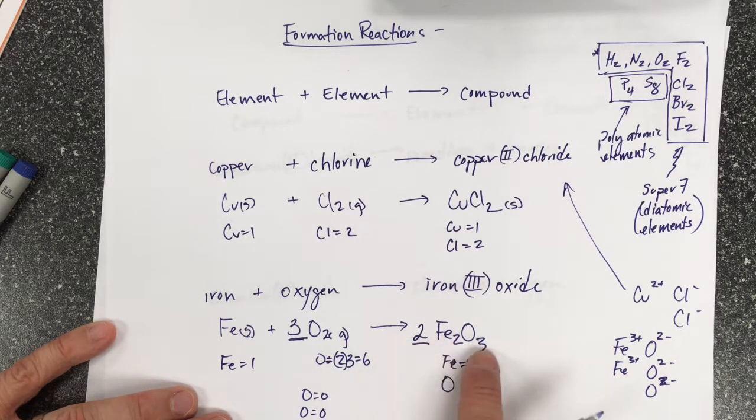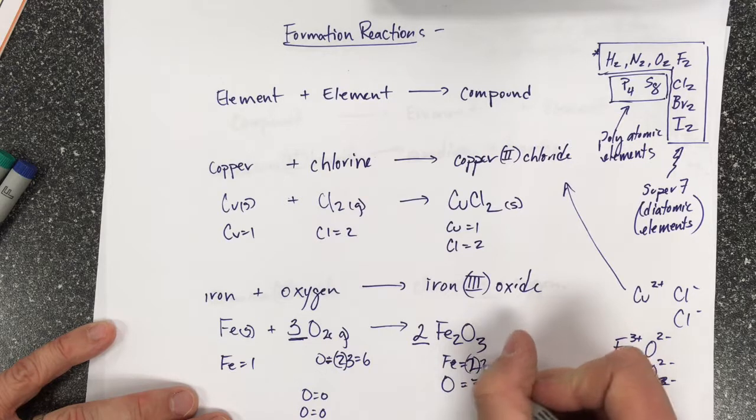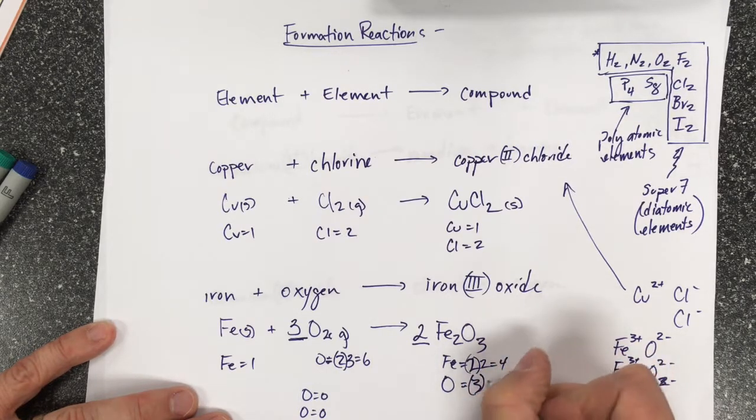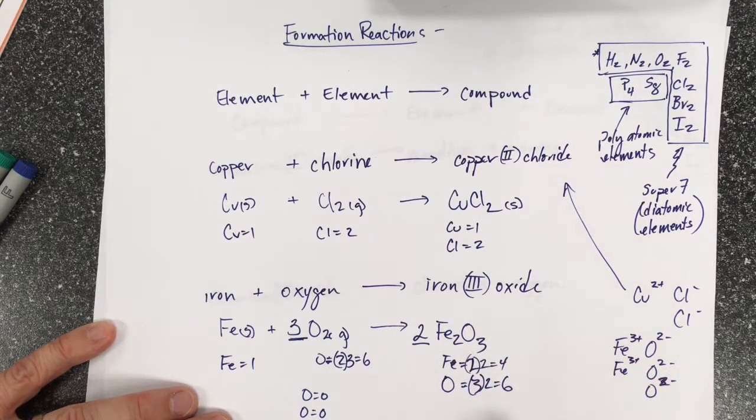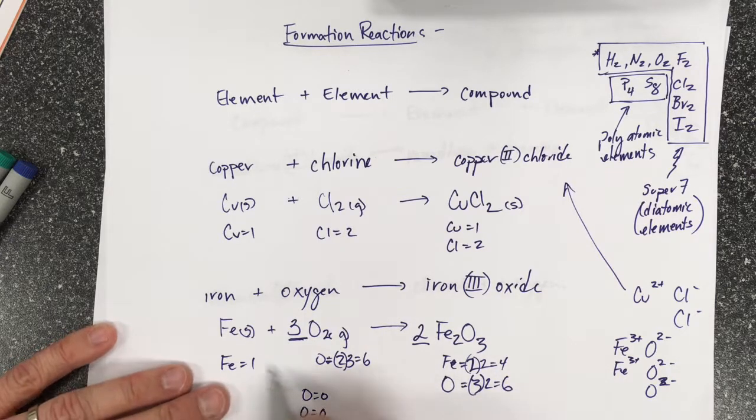So this 2 applies to everything in this formula. So this is going to be 4 and this is going to be 6. My oxygens are equal, but now my irons aren't.